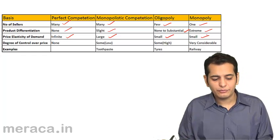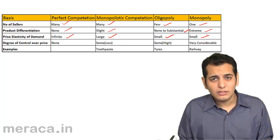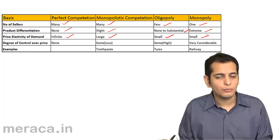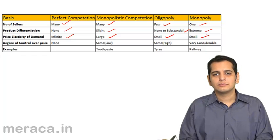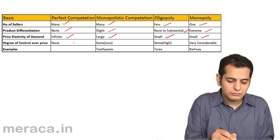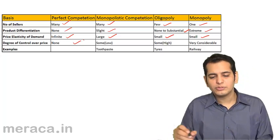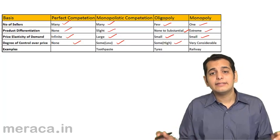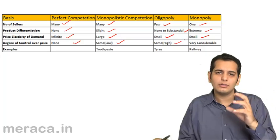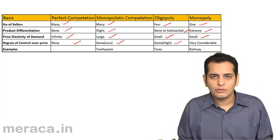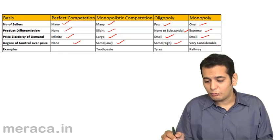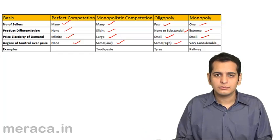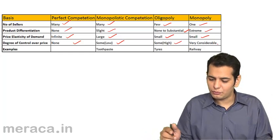Next, we have degree of control over price. In perfect competition, sellers have no control at all. In monopolistic competition, they have some control. In oligopoly, they have a higher degree of control compared to monopolistic competition. And in monopoly, since he is the sole seller, he makes the price and has a high degree of control over price.